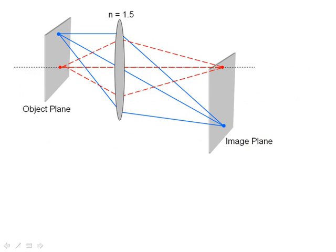We have two objects, a red object and a blue object, emitting rays of light on the object plane and forming an image on the image plane. Typical glasses have indices on the order of around 1.5 as shown here.